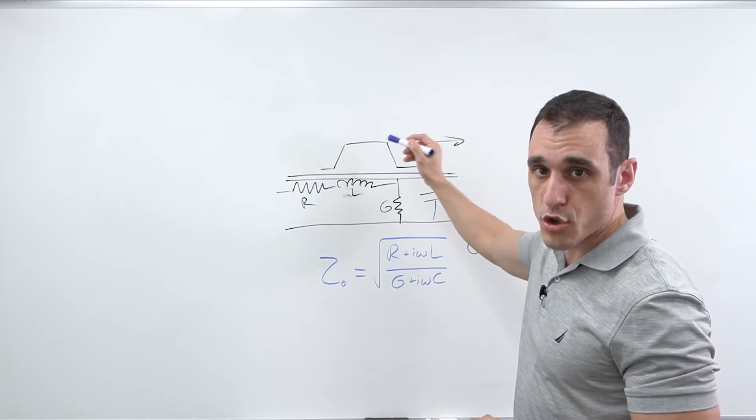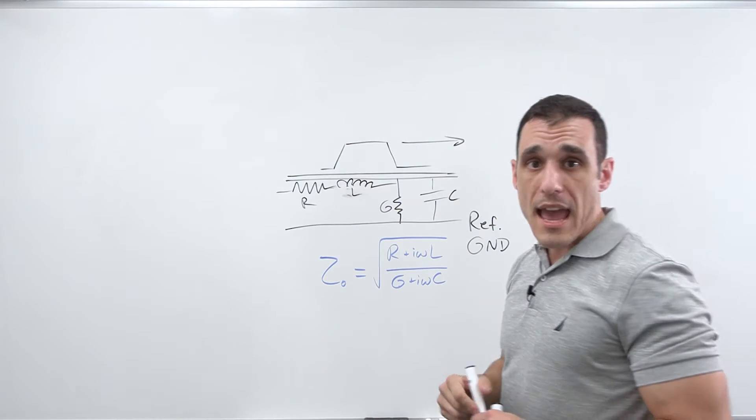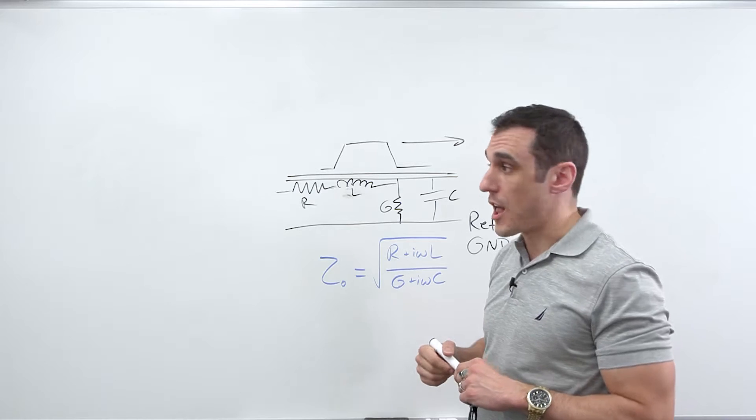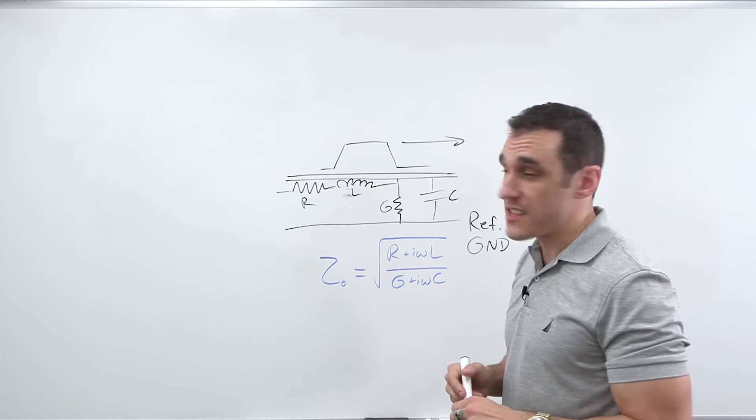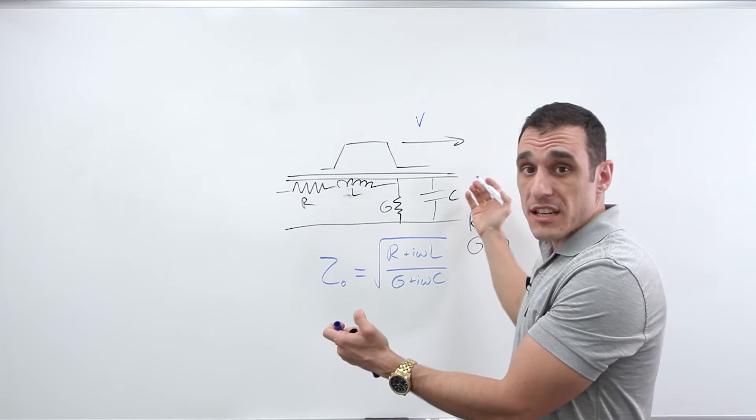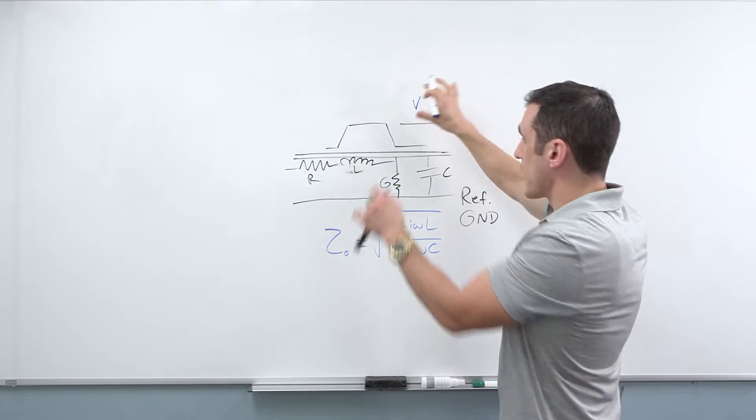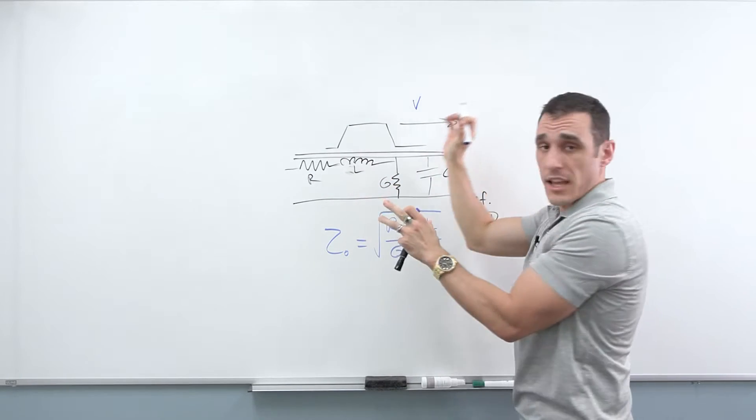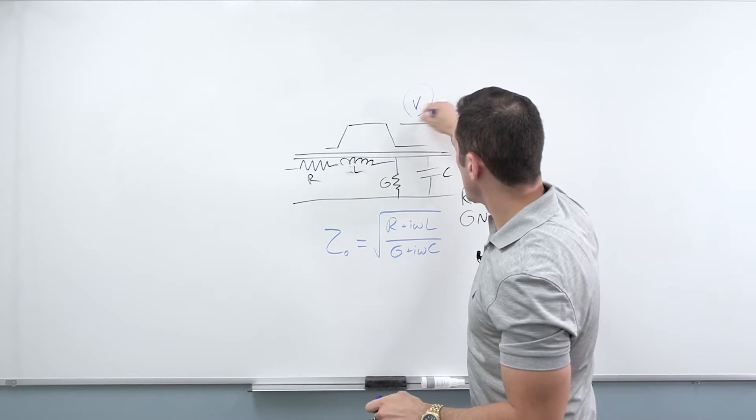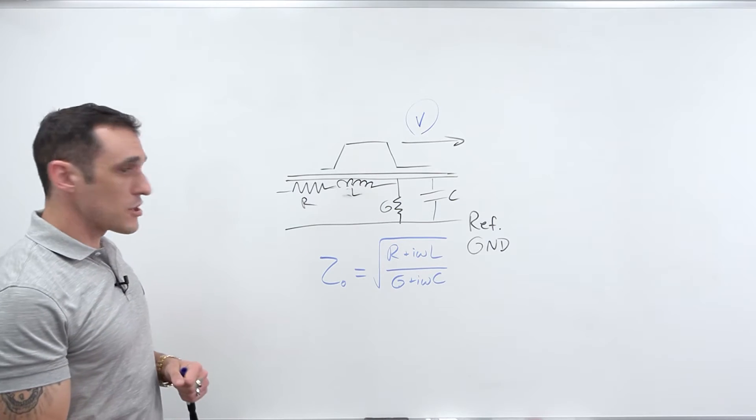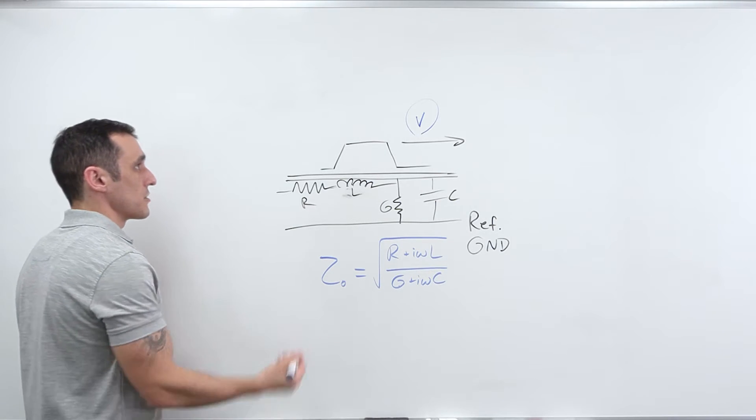Remember, this signal is traveling on this transmission line and the signal does not travel instantaneously across the transmission line. It actually travels at the speed of light. We'll just call it V in this medium. So this medium, wherever the medium that exists around the conductor is going to determine what this velocity is. So how does this relate to the propagation constant? The propagation constant has a very simple relation.